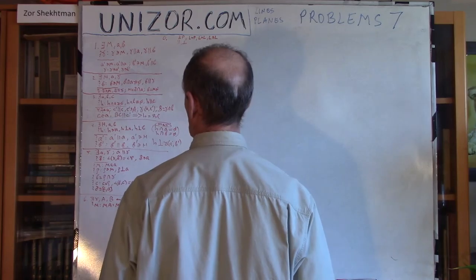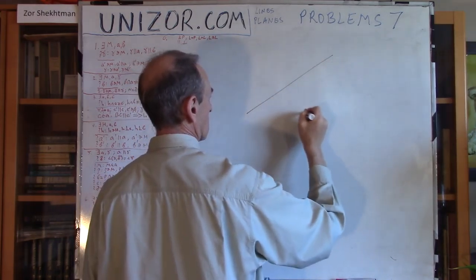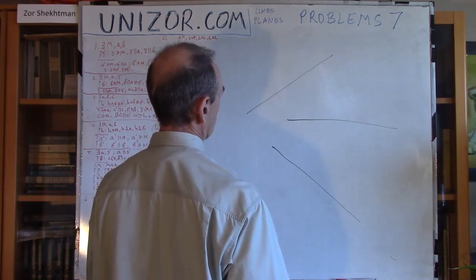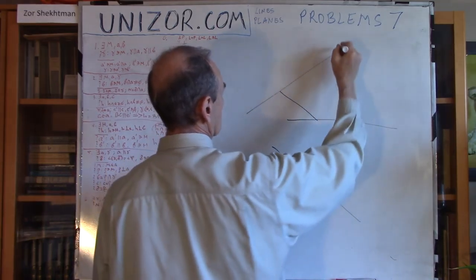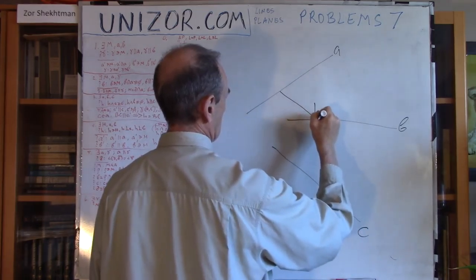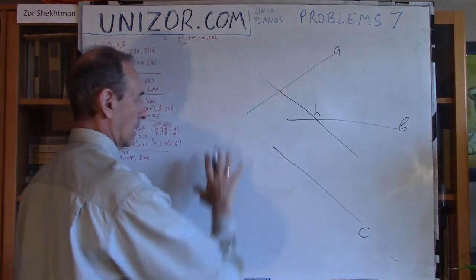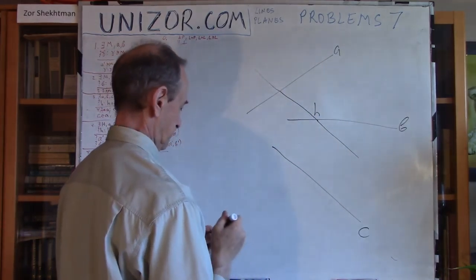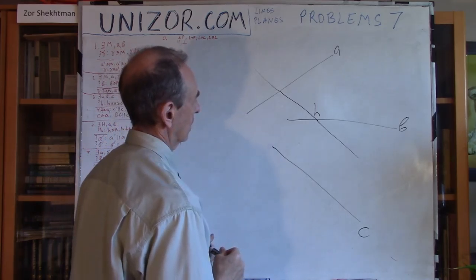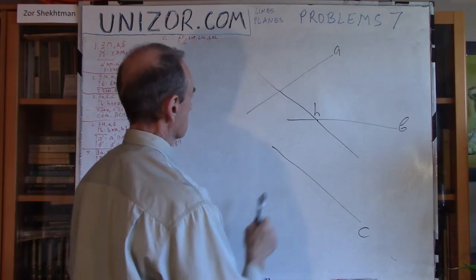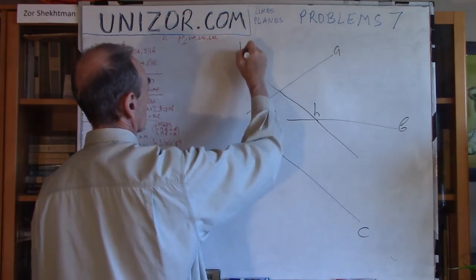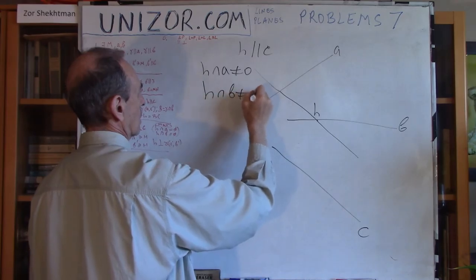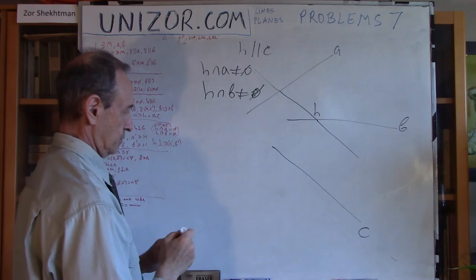Next, problem three: we have three lines in space. I have to draw a line H which intersects two of them and is parallel to the third one. I have drawn them on the surface of the board, but in theory they're all skew lines somewhere in space. So H is supposed to be parallel to C, and it's supposed to intersect both A and B.